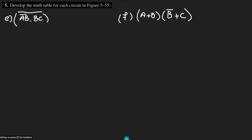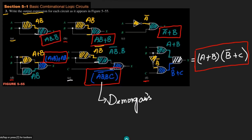Welcome back guys, this is question number 5 and today we are going to solve the 2 remaining parts of this question. Previously we have seen how to find the truth table for the circuit given in figure 5.55. We solved parts a, b, c, and d, but today we are going to talk about part e and part f, and the expressions for them are here.